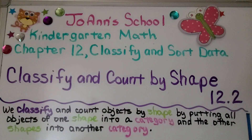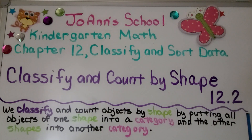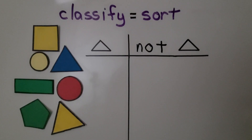Lesson 12.2: Classify and Count by Shape. We classify and count objects by shape by putting all objects of one shape into a category and the other shapes into another category. When we classify objects, we sort them into different sets by following a rule.